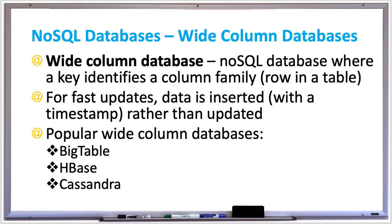Wide columns can also store multiple versions of each value marked with a timestamp. You use this timestamp in a query to find older values if needed, and the most recent version is selected if no timestamp is provided. Wide column databases require fast reads and writes, so they save a new version with a timestamp rather than updating a value. They also require high volumes of data coming in.